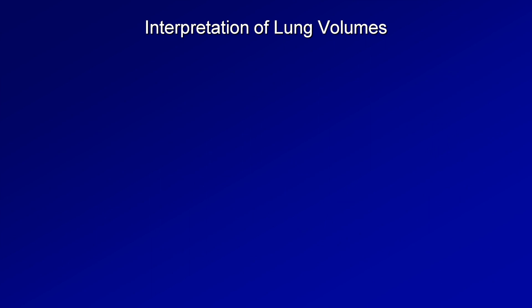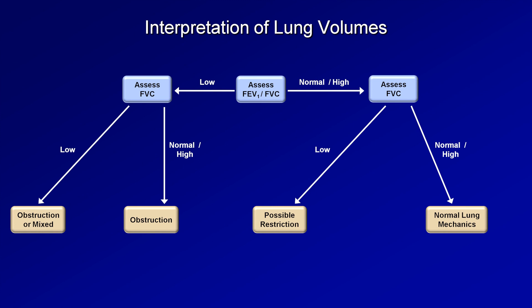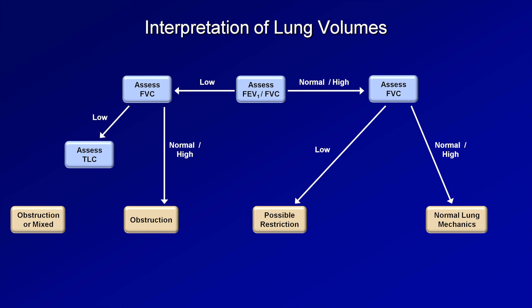I am going to end by returning to this diagnostic algorithm from the last video. You may remember that I pointed out a good degree of uncertainty which remained using this in its current form. So how can we eliminate some of that uncertainty using our knowledge of lung volumes? First is this category of obstruction versus mixed disorder for patients with a low FEV1 to FVC ratio and a low FVC. If we also examine the TLC, this uncertainty can be resolved. If the TLC is normal or high, the patient has obstruction — specifically the pseudo-restriction variant. Whereas if the patient has a low TLC, he or she has a mixed defect.